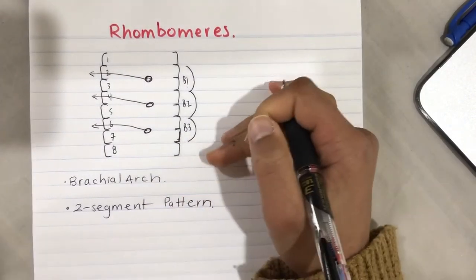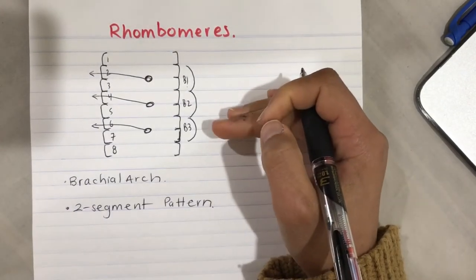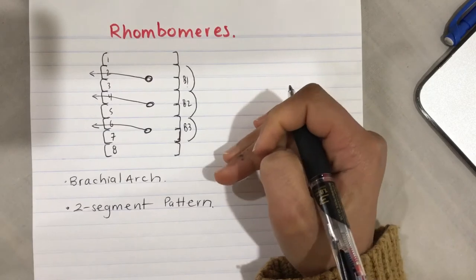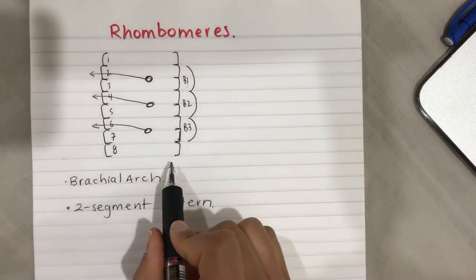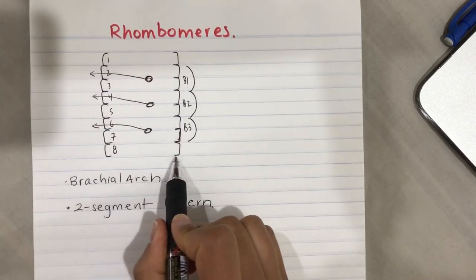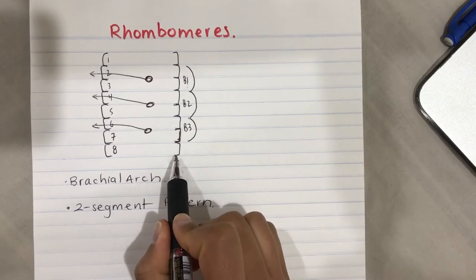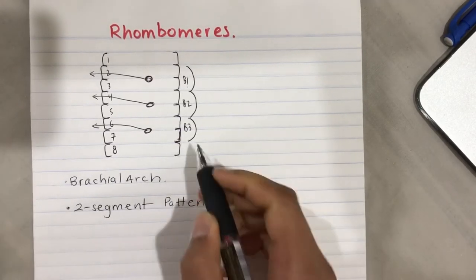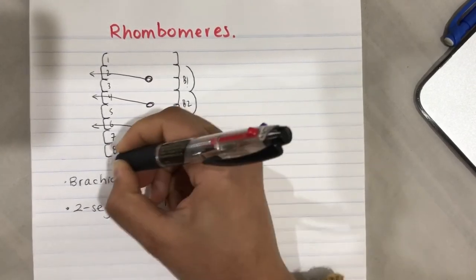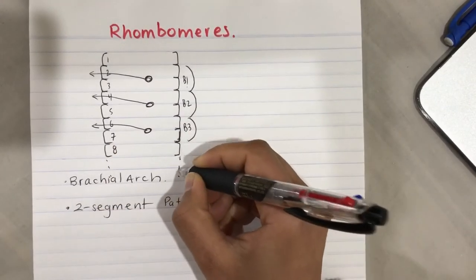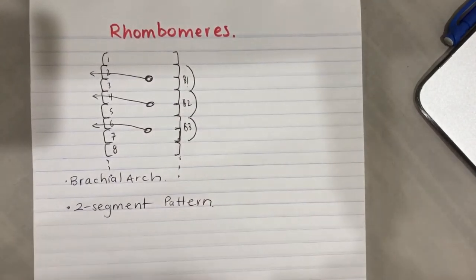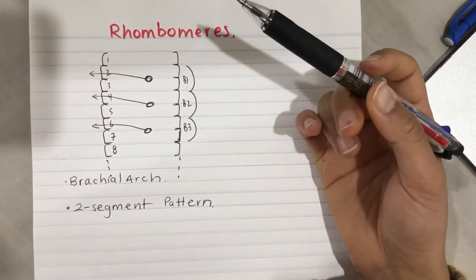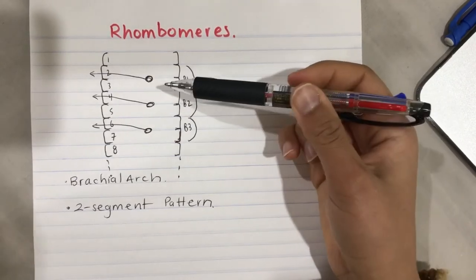What determines the Hox gene in each rhombomere? Retinoic acid is released from the bottom of the rhombencephalon, also called the hindbrain, and from the spinal cord. Each rhombomere receives a gradient of retinoic acid that determines which Hox gene is expressed.